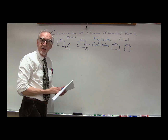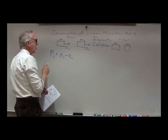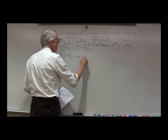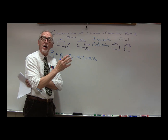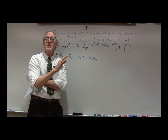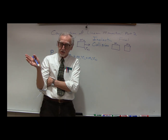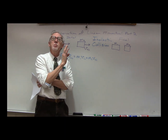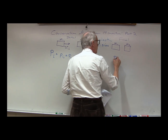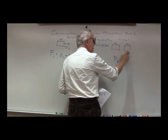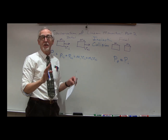One thing we can do is calculate the total initial momentum, p initial, which is p1 initial plus p2 initial, equal to m1 v1 initial plus m2 v2 initial. The total momentum only depends on external forces, not internal forces. As long as there are no external forces, or they are negligible — the same assumption we had for the elastic collision — the total momentum will not change. So the total final momentum, m1 v1 final plus m2 v2 final, must equal the total initial momentum. Momentum is conserved.